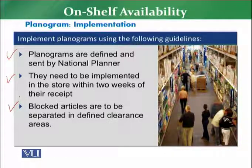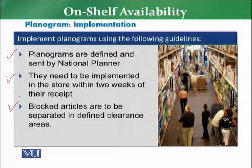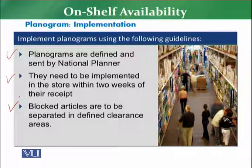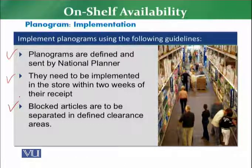The third implementation guideline is that blocked articles are to be separated into defined clearance areas. There are many articles which are blocked for sale or blocked for ordering by the buyer. Once articles are blocked but still available in the store, they must be separated and placed in the clearance area — they should not be on the main planogram shelf. By moving them to the clearance area, you can liquidate these articles. Normally, the main planogram shelf contains only active articles available for sale to the customer.